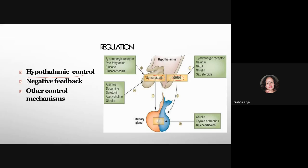Other factors stimulating growth hormone release include: alpha-2 adrenergic receptors, GABA, ghrelin, and sex steroids, all of which stimulate GHRH. Somatostatin is stimulated by beta-2 adrenergic receptors, free fatty acids, glucose, and glucocorticoids, and is negatively affected by amino acids, arginine, neurotransmitters such as dopamine, serotonin, and acetylcholine, and ghrelin. Ghrelin can also directly stimulate the anterior pituitary with a positive effect. Thyroid hormone and glucocorticoids also stimulate growth hormone release, making this a complex regulatory mechanism.